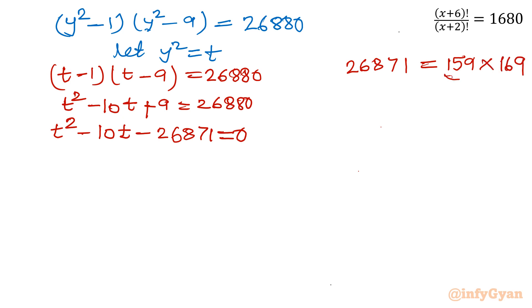And keeping this thing in our mind, if I will take the difference, then I am getting my middle term. So splitting of middle term I am going to write: t² minus 169t plus 159t, because it is negative 10t, minus 26,871 equal to 0.